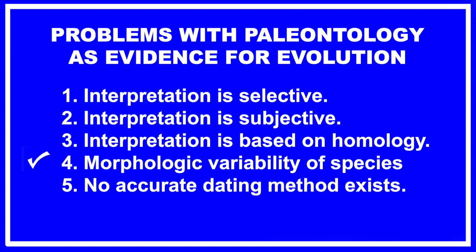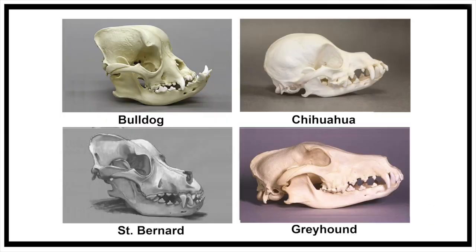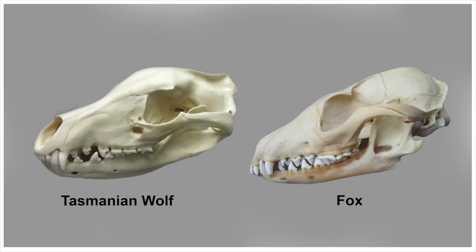The fourth point: morphologic variability of species. This is something rarely considered in the interpretation of the fossil record. The morphologic variability of species is dramatically demonstrated in the selective breeding of dogs. Every canine species today is descended from the common gray wolf, and all dogs can interbreed with each other and with the gray wolf — so they're all one species. Yet look at the differences in anatomy, particularly skull morphology. All dogs are 99.9% identical in terms of their DNA. This teaches us an important principle of biology: you cannot look at phenotype and accurately judge the degree of genetic differences or similarities. Here are four different dog skulls — Chihuahua, Bulldog, St. Bernard, and Greyhound — demonstrating the difference that can occur within one species.